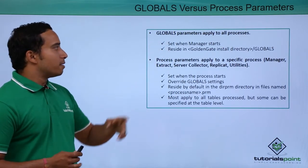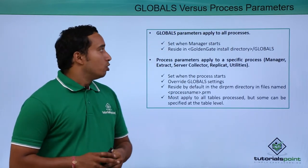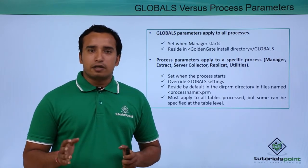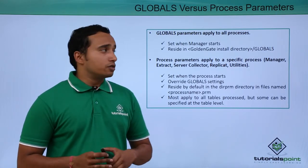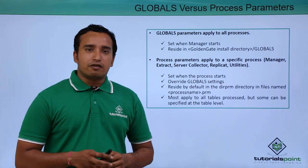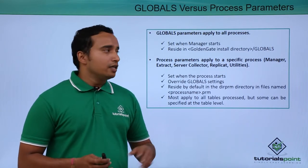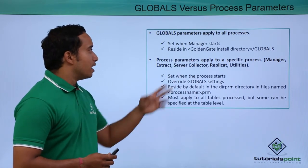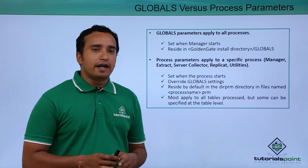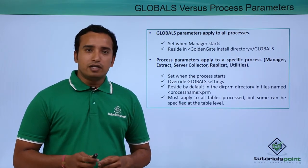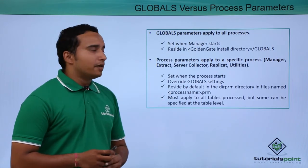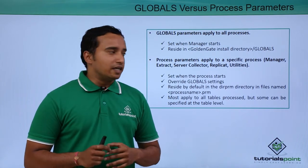The global parameter file is applied to all the processes — extract process, replicat process — all these processes. It is set when the manager starts. Whenever the manager process is starting, these parameters are set, and the file resides in the globals directory. There is a separate directory at the OS level known as globals, where this global parameter file is created.